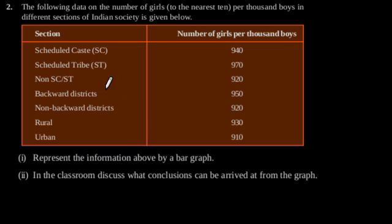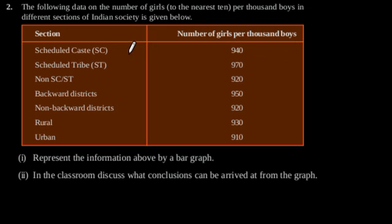Exercise 14.3, Question number 2. The following data on the number of girls to the nearest 10 per 1000 boys in the different sections of Indian society is given below. This is the data on the number of girls per 1000 boys in different sections of the society. First, represent the information above by a bar graph.